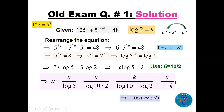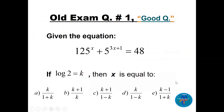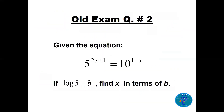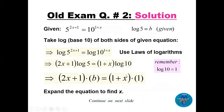Therefore x equals k over (1 minus k), which is answer D. Question number two: given that log of 5 equals b, find x in terms of b. We take log base 10 on both sides — log of 5 to the power (2x+1) equals log of 10 to the power (1+x).